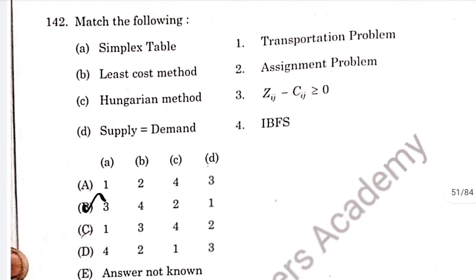Question 142: this is a match-the-following question. Strategy minus IJ greater than 0 — least cost method; initial basic feasible solution; Hungarian method — assignment problem; supply equal to demand — transportation problem. Option B is the correct answer.